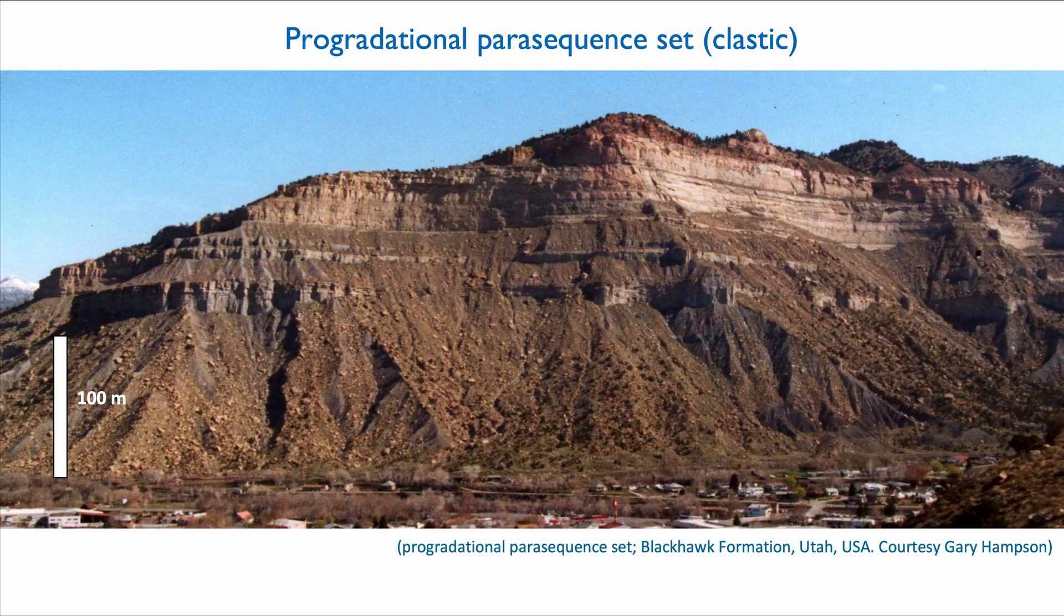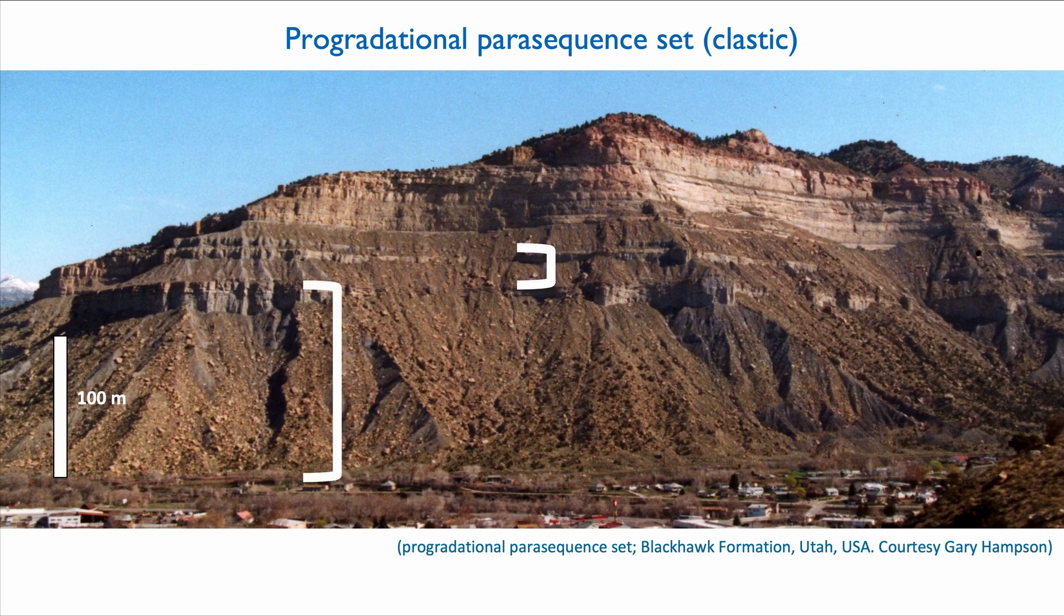In outcrop, it looks something like this. This is a picture of the Book Cliff, the Black Hawk Formation in the USA. You can see that we have multiple parasequences, and each one becomes progressively more enriched in the shallow water sand. This is a progradational parasequence set.